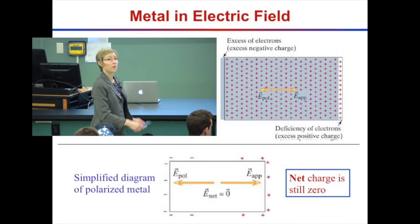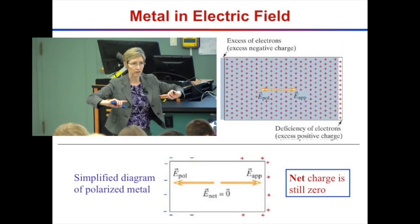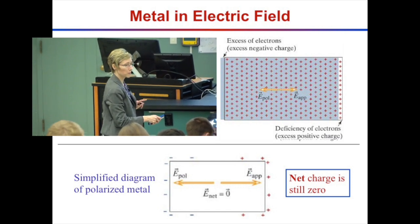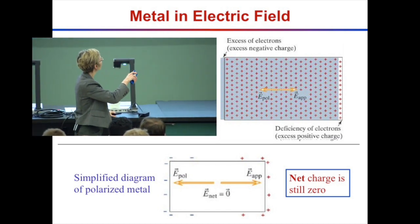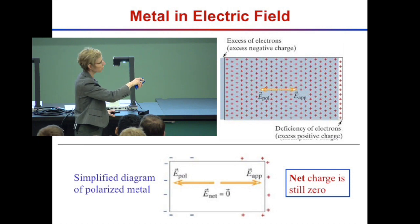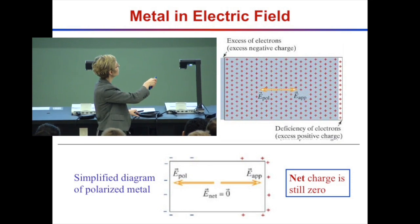Those surface charges arrange themselves so the net electric field inside the conductor equals zero in equilibrium. The polarization field is in the opposite direction to the applied field — positive charge on one edge, and the field points away from positive charges, canceling the applied field. The net electric field inside the material is zero and the net charge is still zero.